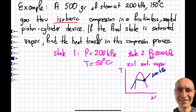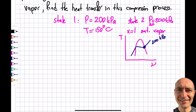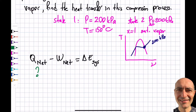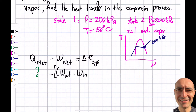We need to find the heat transfer. Since we've covered the First Law, we use the energy balance: Q_net minus W_net equals delta E of the system. Q_net is our unknown. W_net consists of W_out minus W_in plus boundary work W_b.